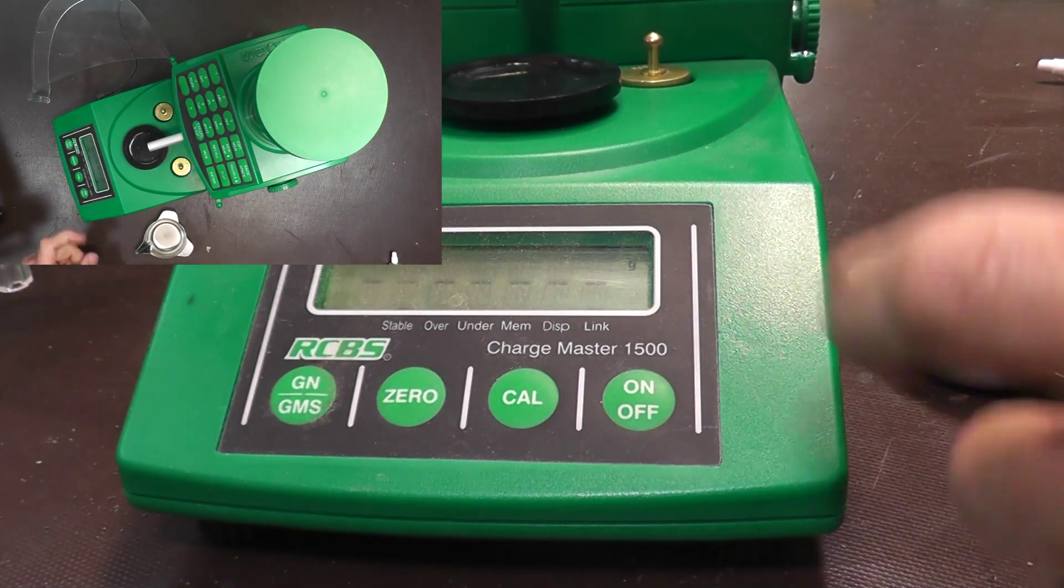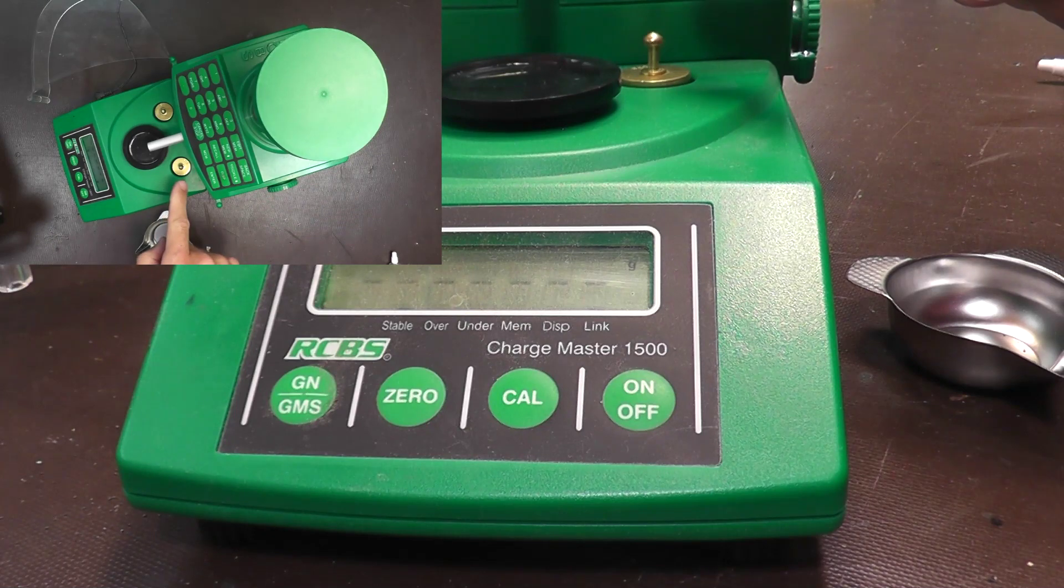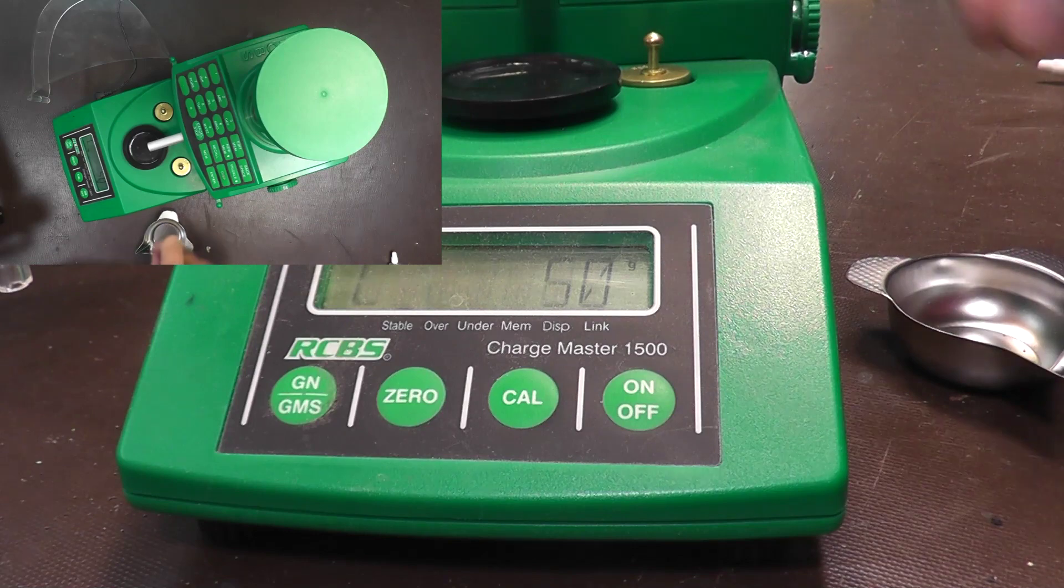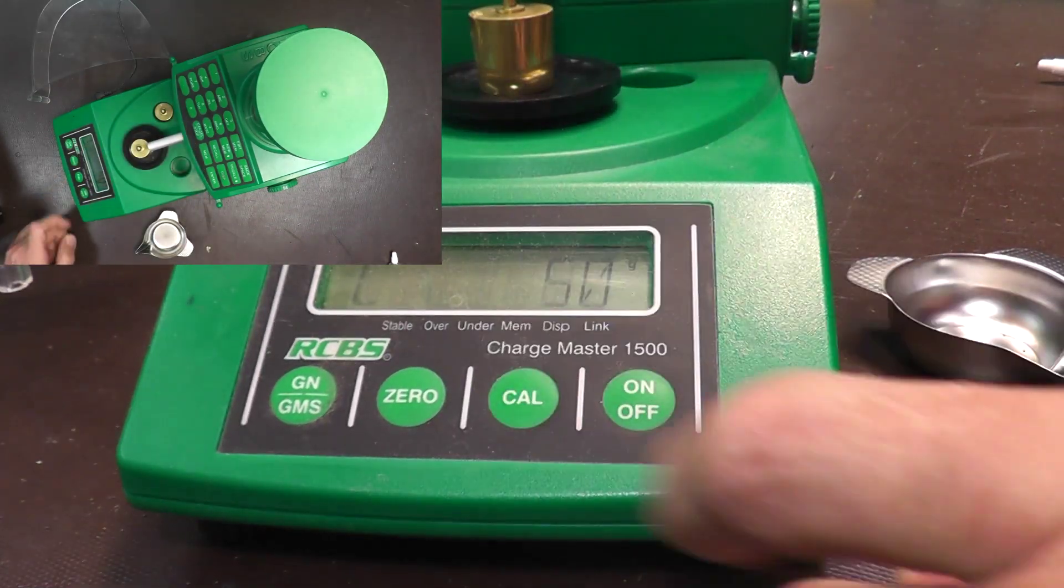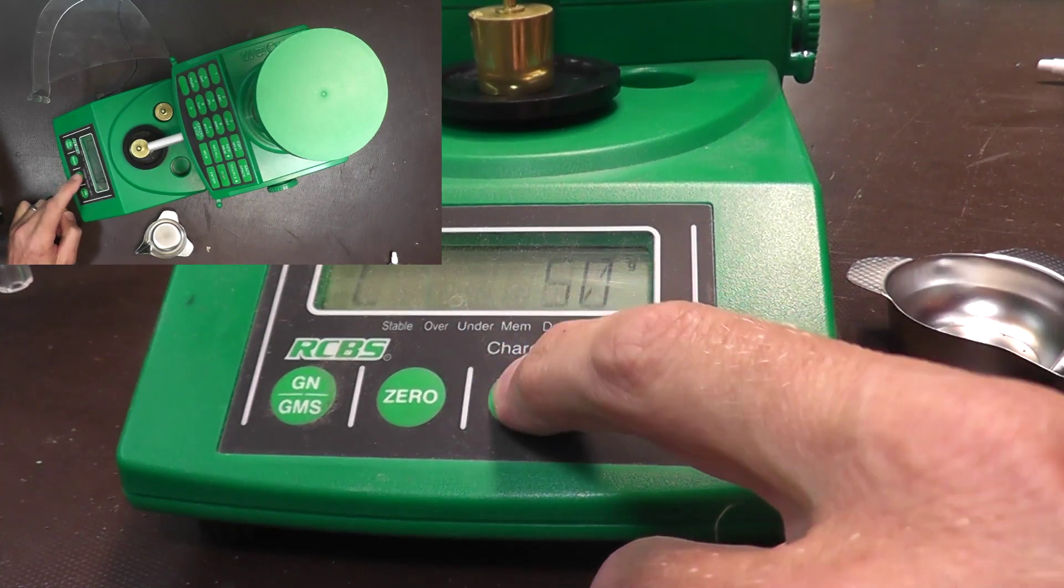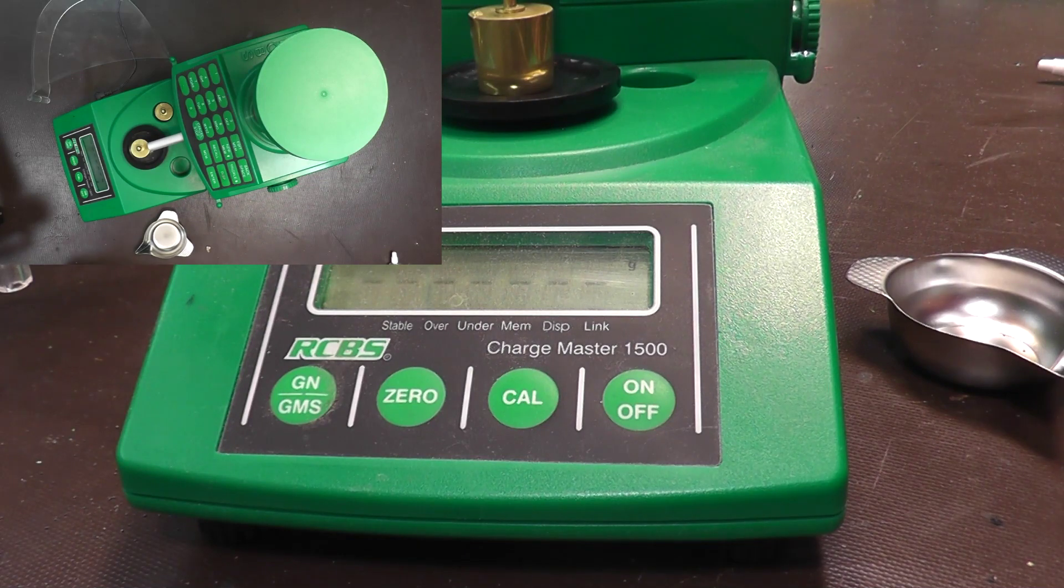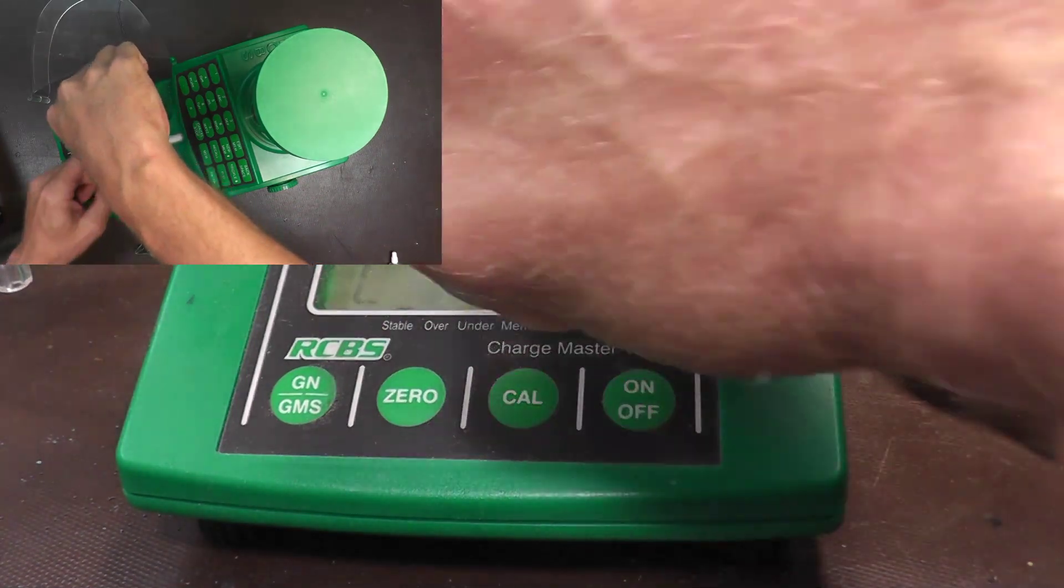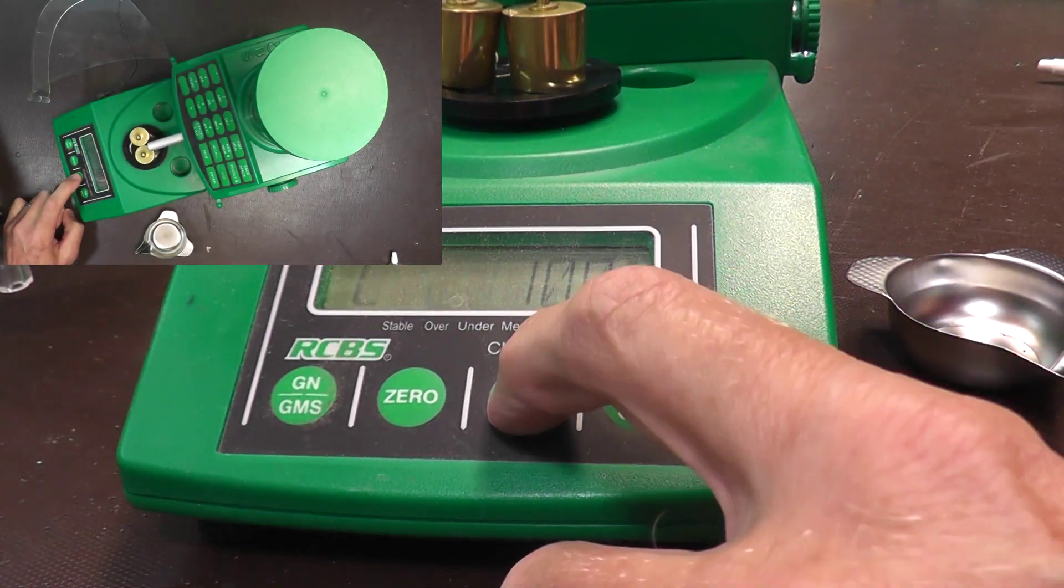With nothing on there you press the calibration key again and it comes up and says 50. So it wants me to put one of these 50 gram weights on here. Now I'm going to tell the scale that it's 50. Press it. And there it goes, so now it finally took it. So you can see it's not taking the buttons when I press them, and it's very frustrating when you're trying to type in the amount of powder you want to dispense.